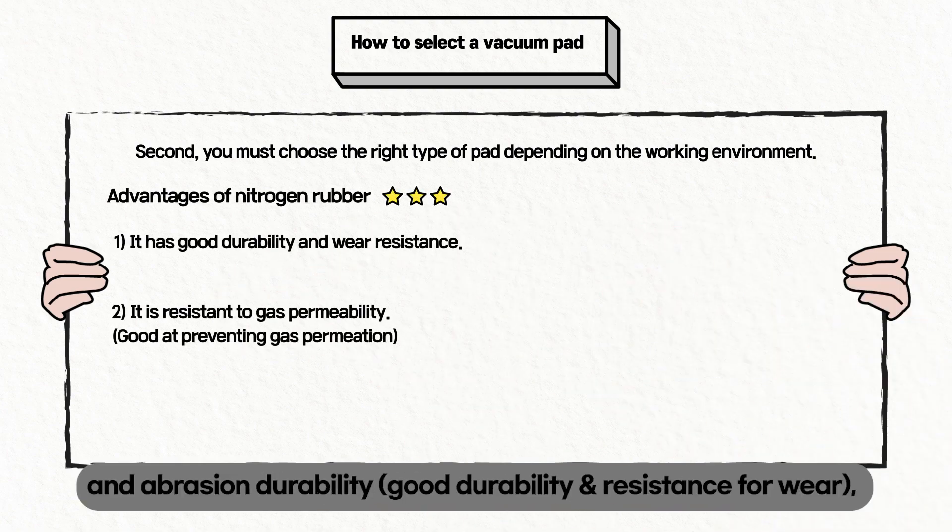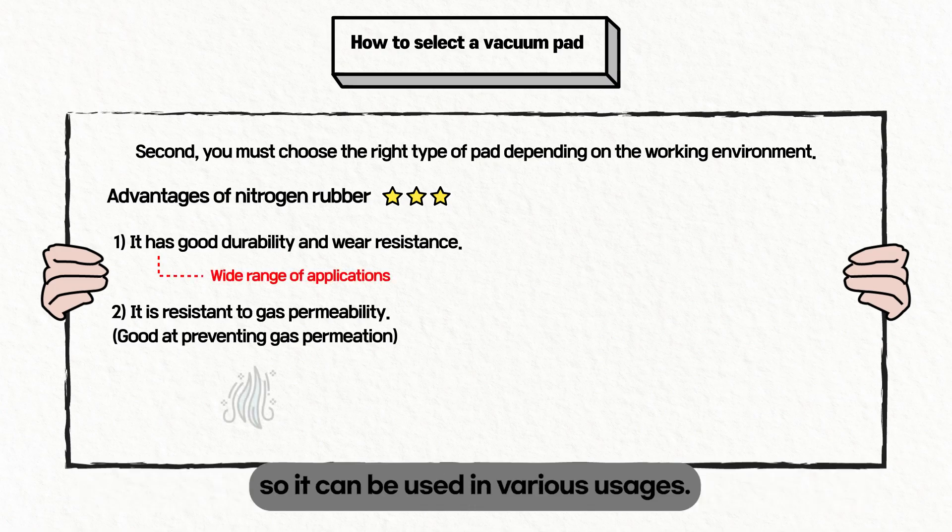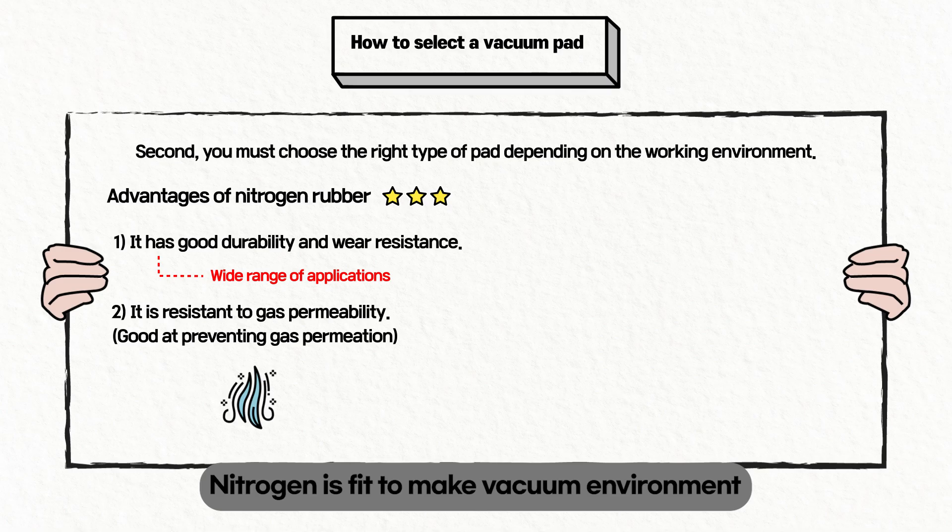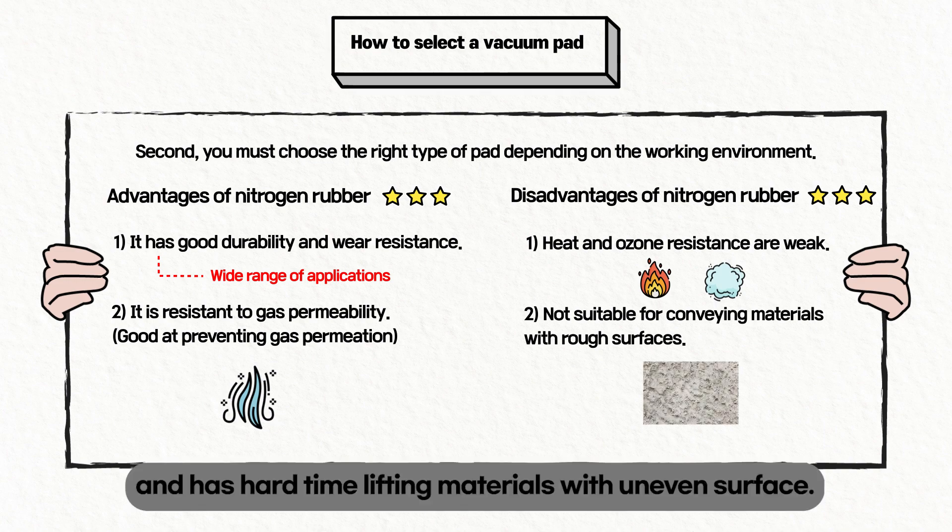Nitrogen rubber has strong general and abrasion durability, so it can be used in various applications. Nitrogen is fit to make vacuum environments because it blocks gas penetration, but it is fragile to heat and ozone and has a hard time lifting materials with uneven surfaces.